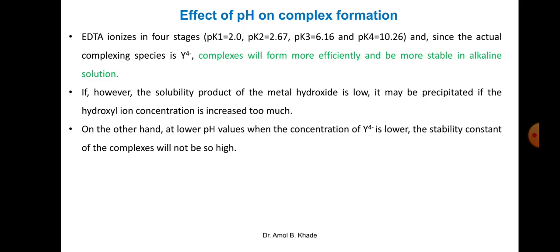Regarding the effect of pH on complex formation: EDTA ionizes in 4 stages with pKa values of 2, 2.67, 6.16, and 10.26. Since the actual complexing species is Y⁴⁻, complexes form more efficiently and are more stable in alkaline solution. If the solubility product of the metal hydroxide is low, it may precipitate if hydroxyl ion concentration is increased too much. At lower pH, the concentration of Y⁴⁻ is lower and complex stability decreases.